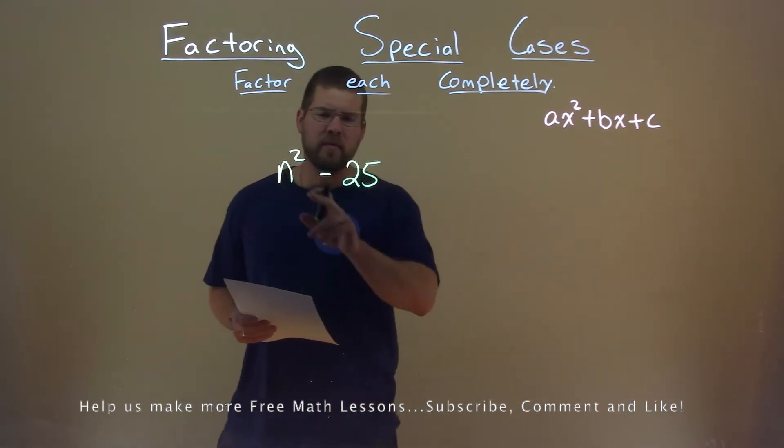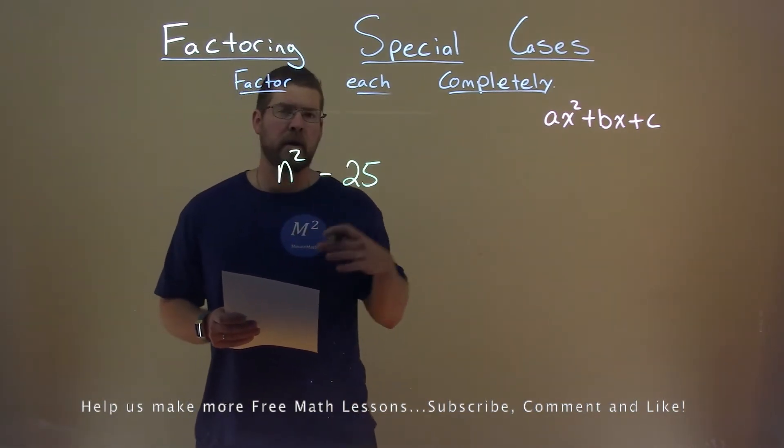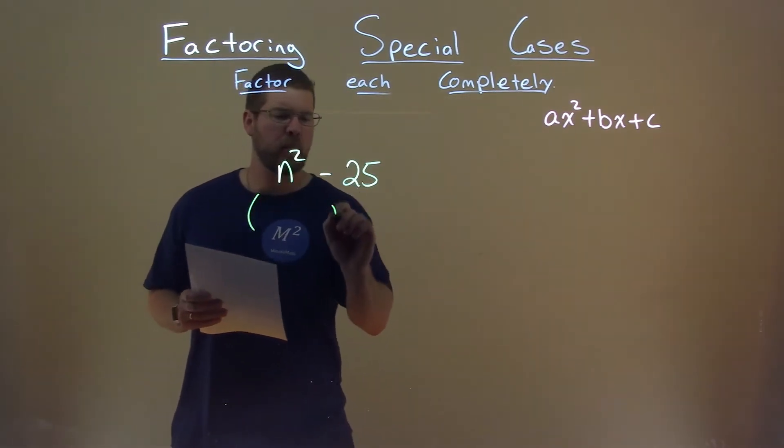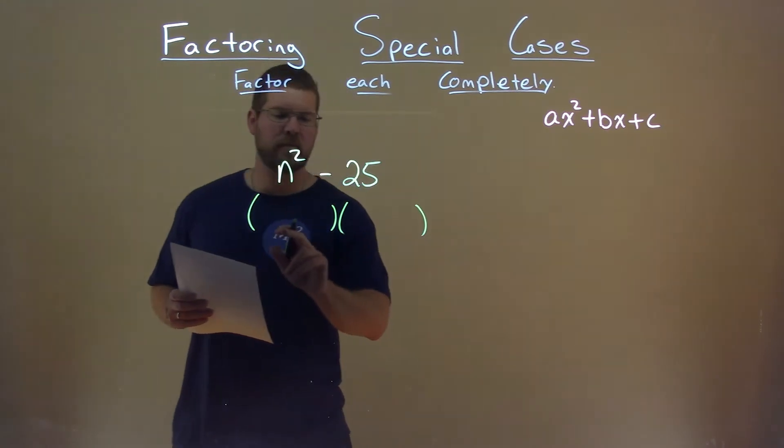Notice n squared is our a value, which is 1, don't really write that. We know when we factor, it needs to be in some form like this.